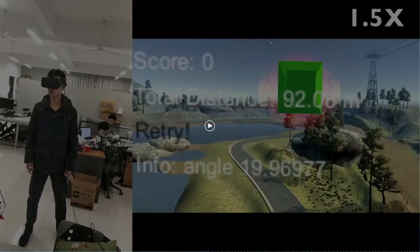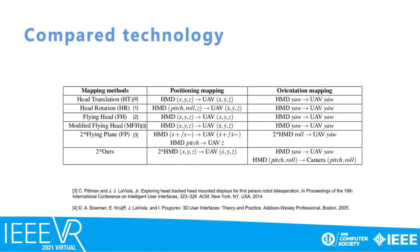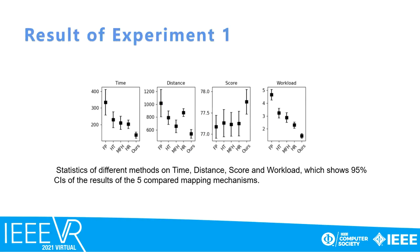The table shows the six compared techniques. Besides our method, we tried different rate-based and position-based solutions in this experiment. As you can see from the results, our method spent less time and distance and achieved better scores. This shows that our method can control the UAV more accurately and freely, and the lower workload shows that our method is simpler for users than other HMD control methods.